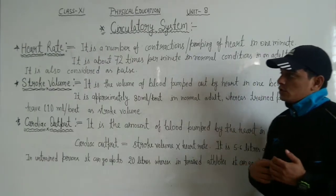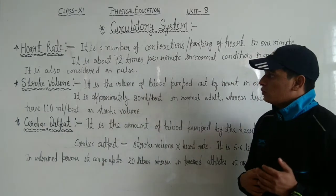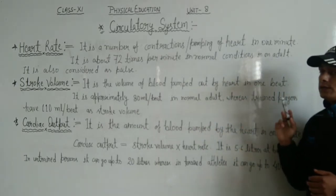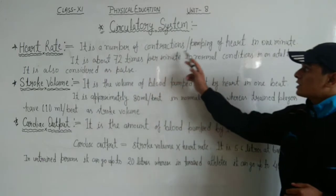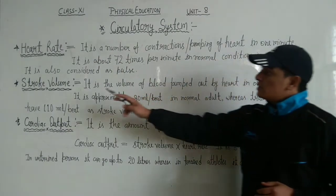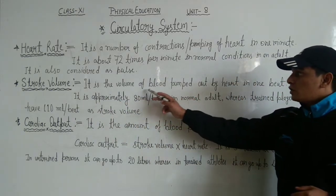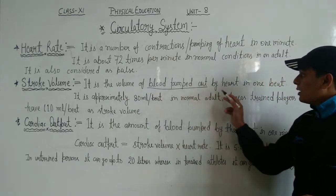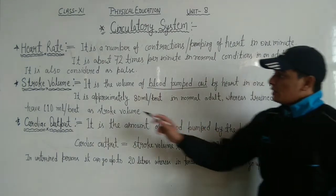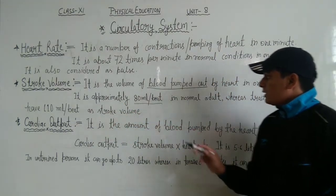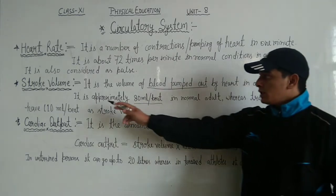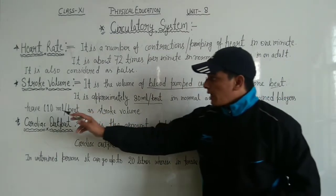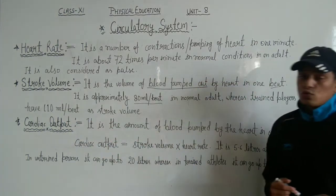The second term is stroke volume. Stroke volume is the volume of blood pumped out by the heart in one beat. It is approximately 80 ml per beat under normal conditions, whereas trained players have a stroke volume of about 110 ml per beat.